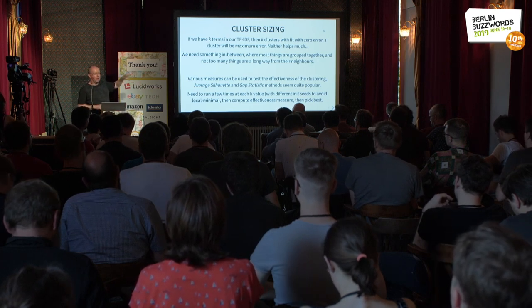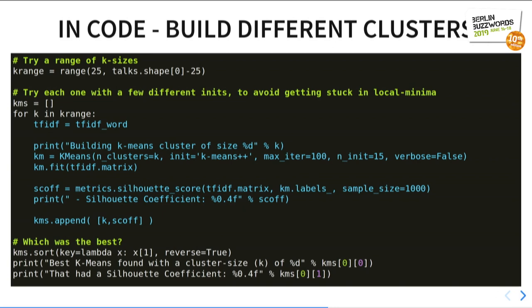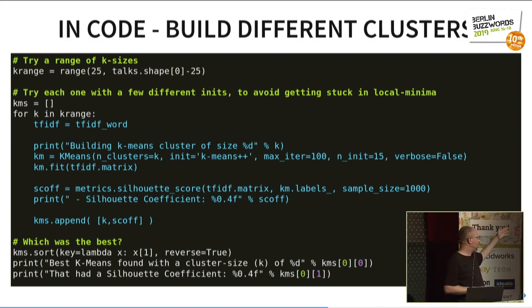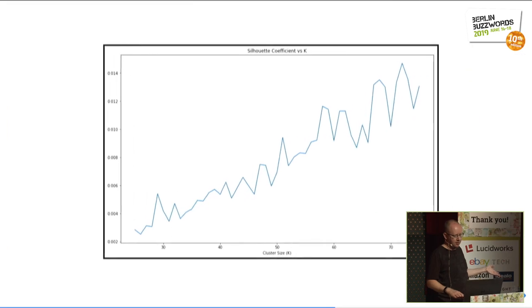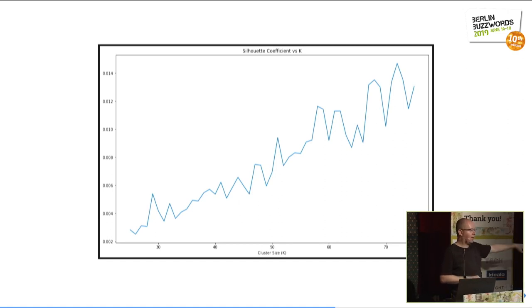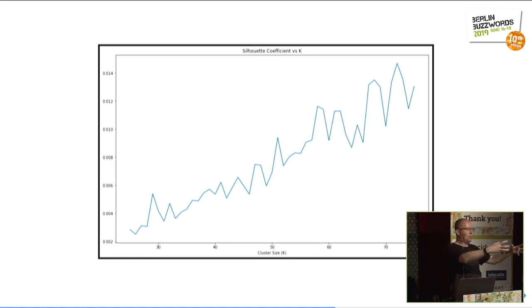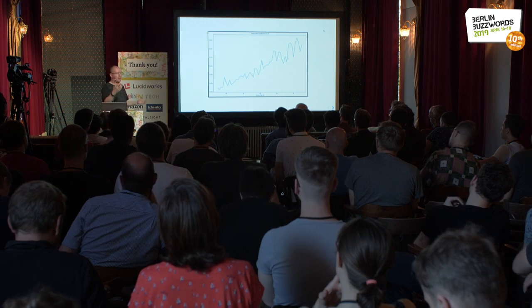We're going to run our k-means clustering a few times at each point and try to see which cluster size works best. In code, we have a range of cluster sizes to try, build a clustering for each one, take the silhouette score to figure out roughly how accurate it is, and then sort to find which was best. It's a lot slower than naive Bayes. We end up with a graph where starting with only a few clusters the accuracy is not great, and as we move toward more clusters the score goes up — but there are local maxima and minima. It's not a nice smooth straight line; some cluster sizes are better than others based on our input data.